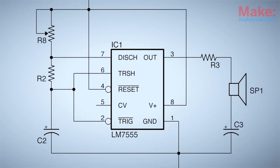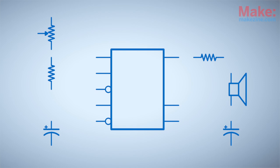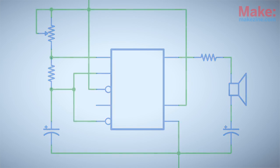Each symbol in a schematic represents a physical component. And each line represents a wire, or conductive trace, that connects the components together.